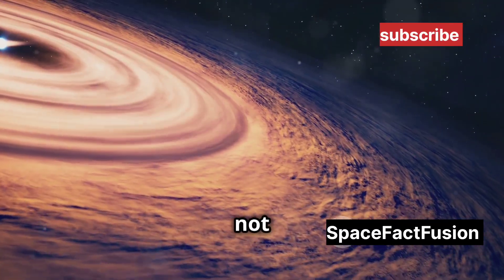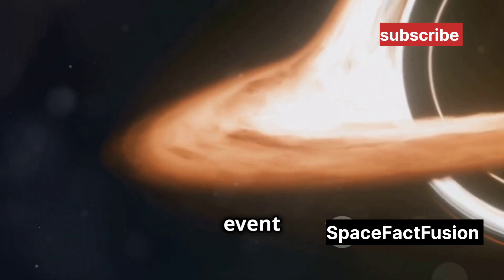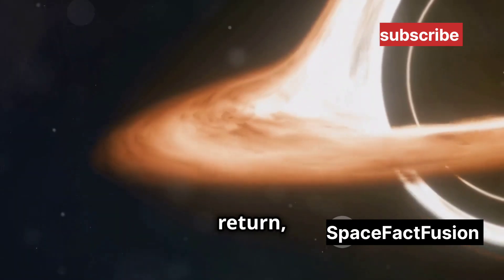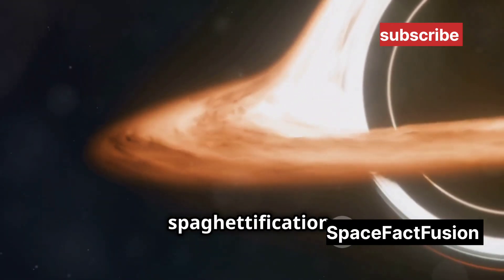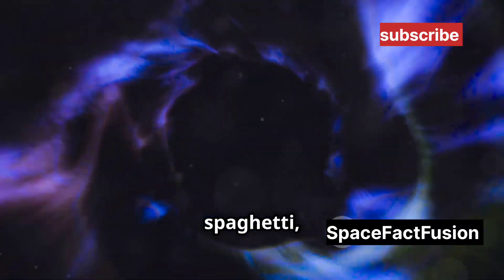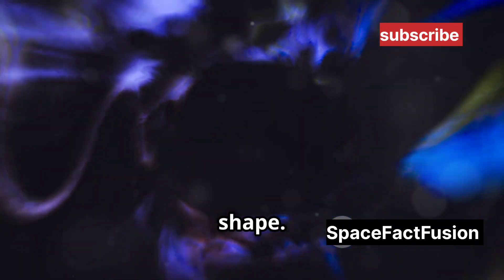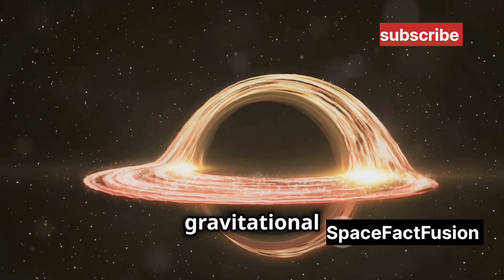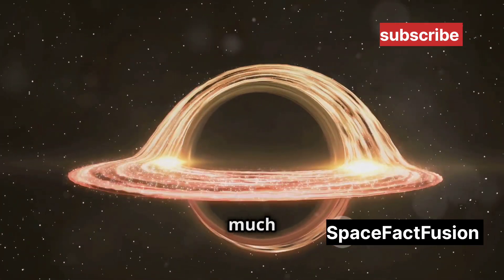This journey is not for the faint-hearted. As you approach the event horizon, the point of no return, you'd experience spaghettification. The immense gravity would stretch your body like spaghetti, elongating you into a thin noodle-like shape. This is because the gravitational pull on your feet would be much stronger than on your head, creating a significant difference in force.